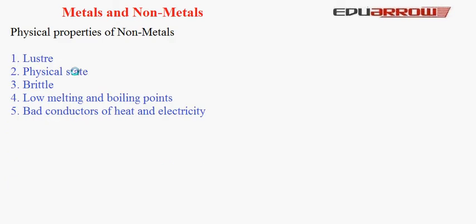Let us now understand the physical properties of non-metals. 1. Lustre: Non-metals have no lustre, meaning they have no shining surface. 2. Physical State: Non-metals can exist in all three states — solid, liquid, or gas.